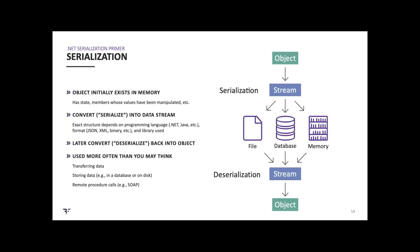Let's talk about serialization. In an object-oriented programming language, you may have an object instantiated in memory with state and member values. If a developer wants to reuse that object later or send it to a different application, they can serialize it — convert it into a data stream that can be stored in a file, database, sent over a network, or stored in memory. That data stream can later be deserialized, converted back into an object in memory.